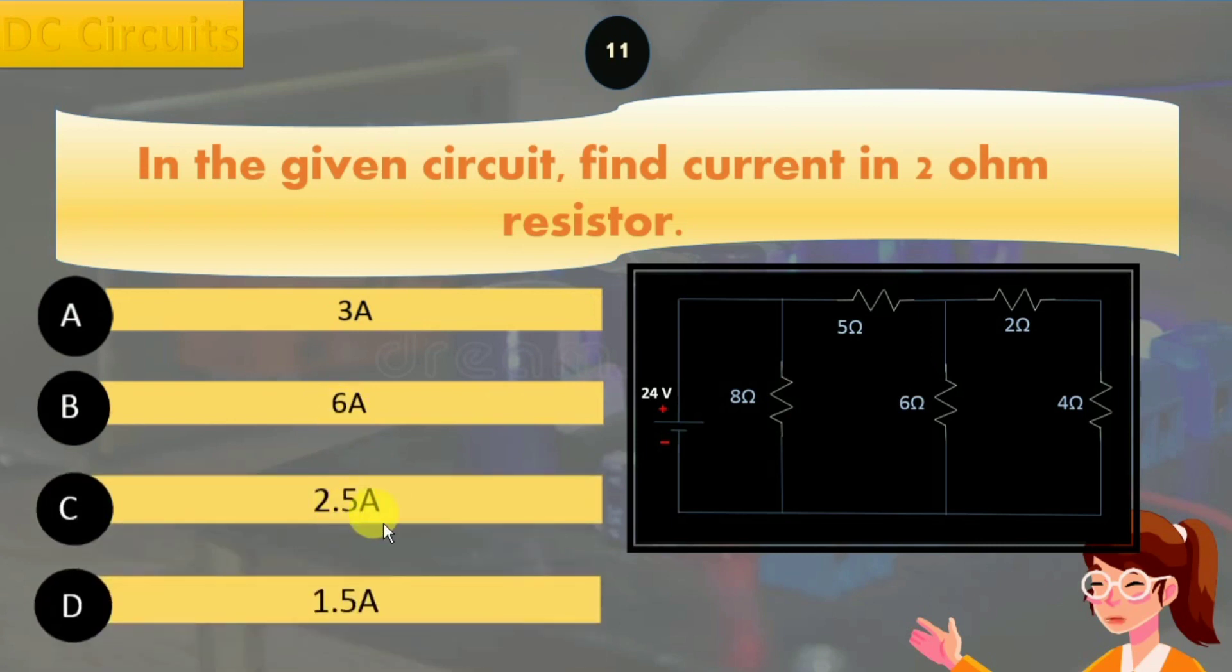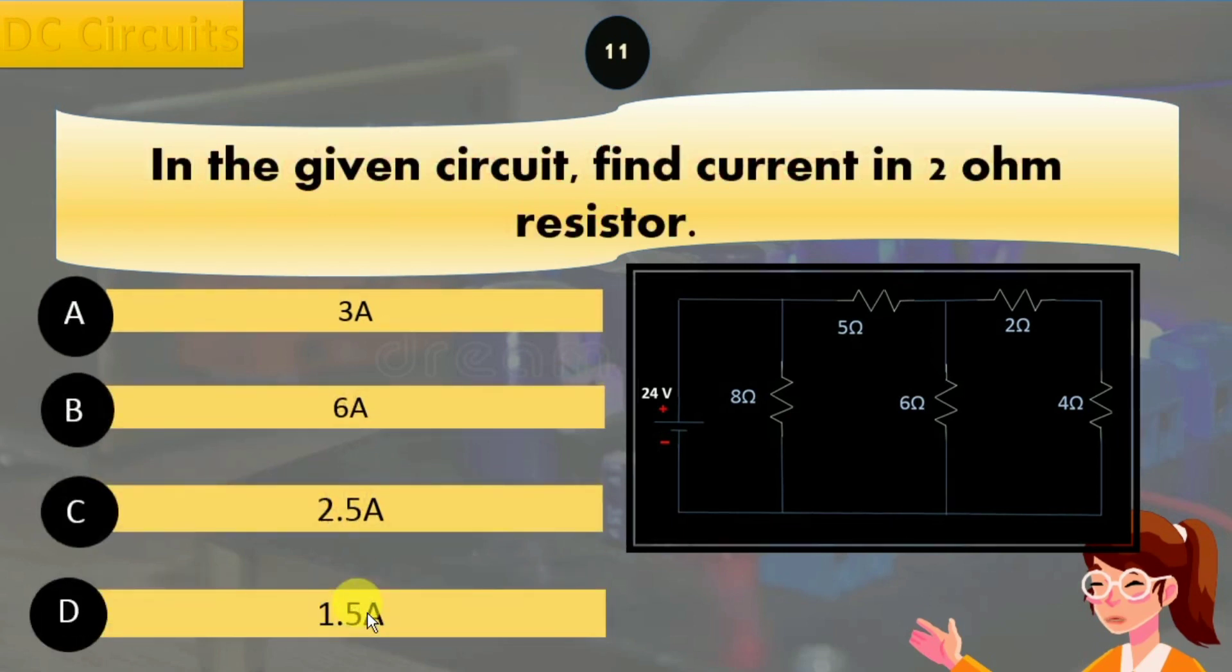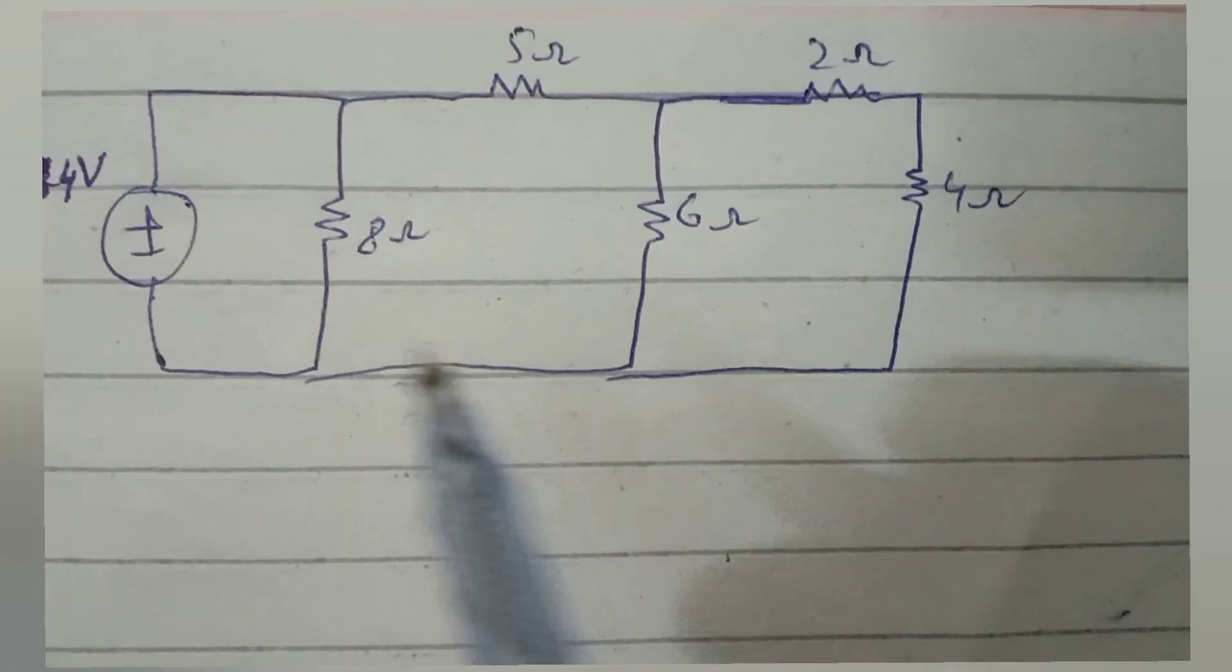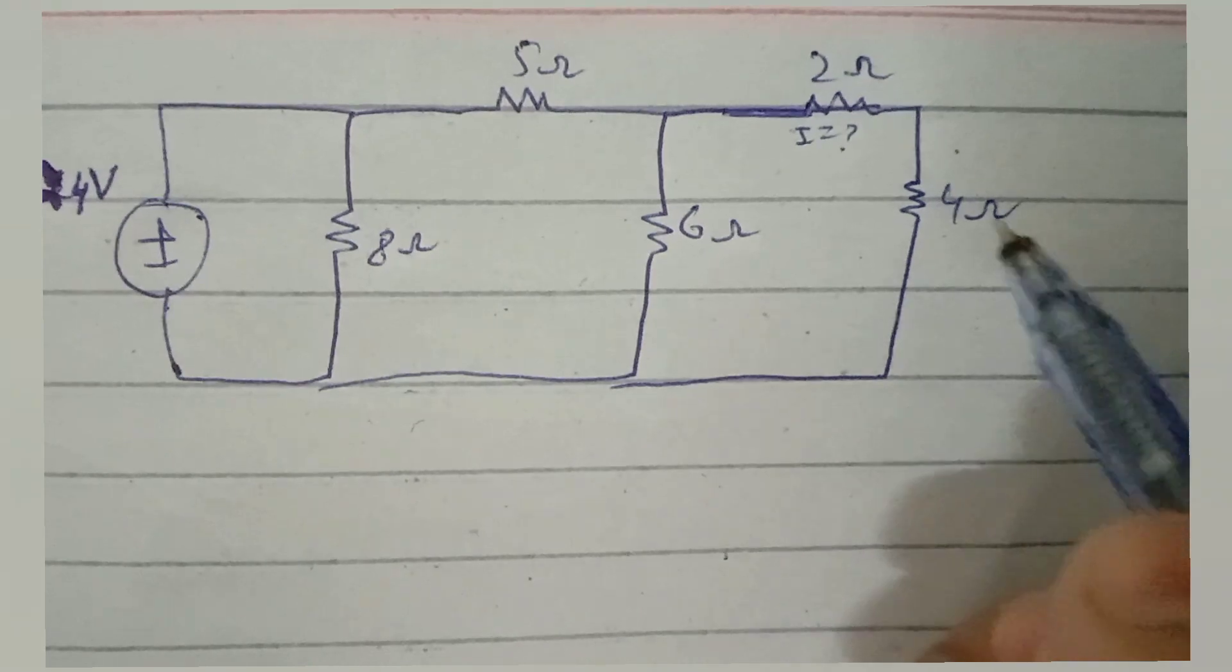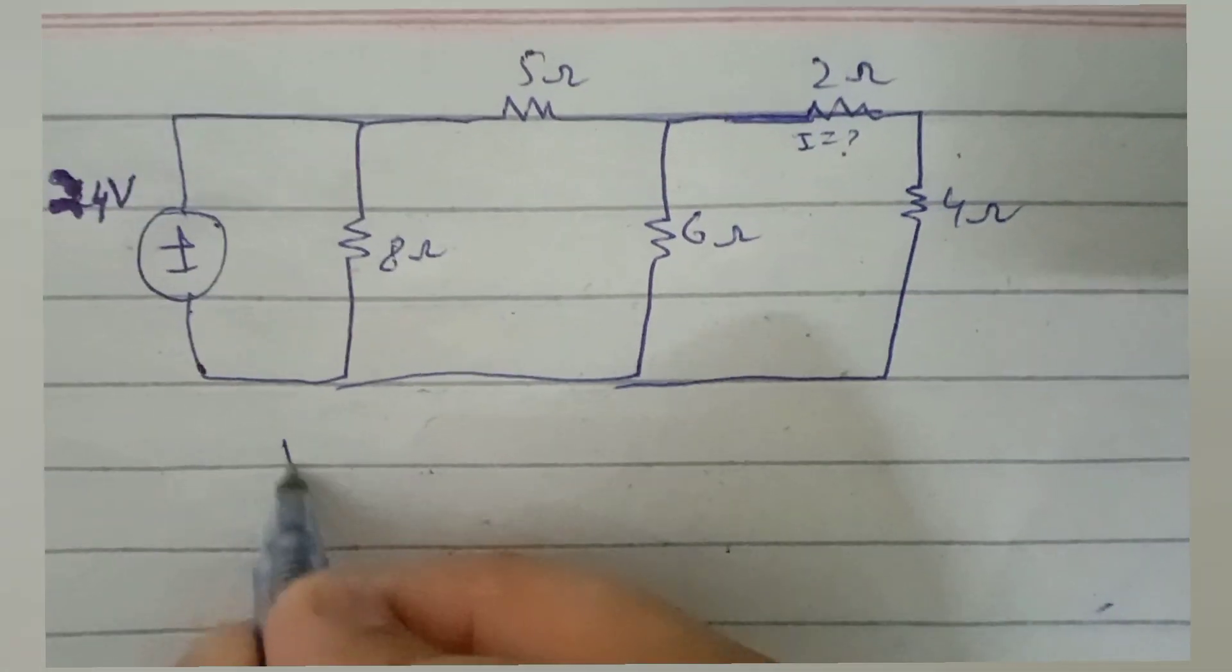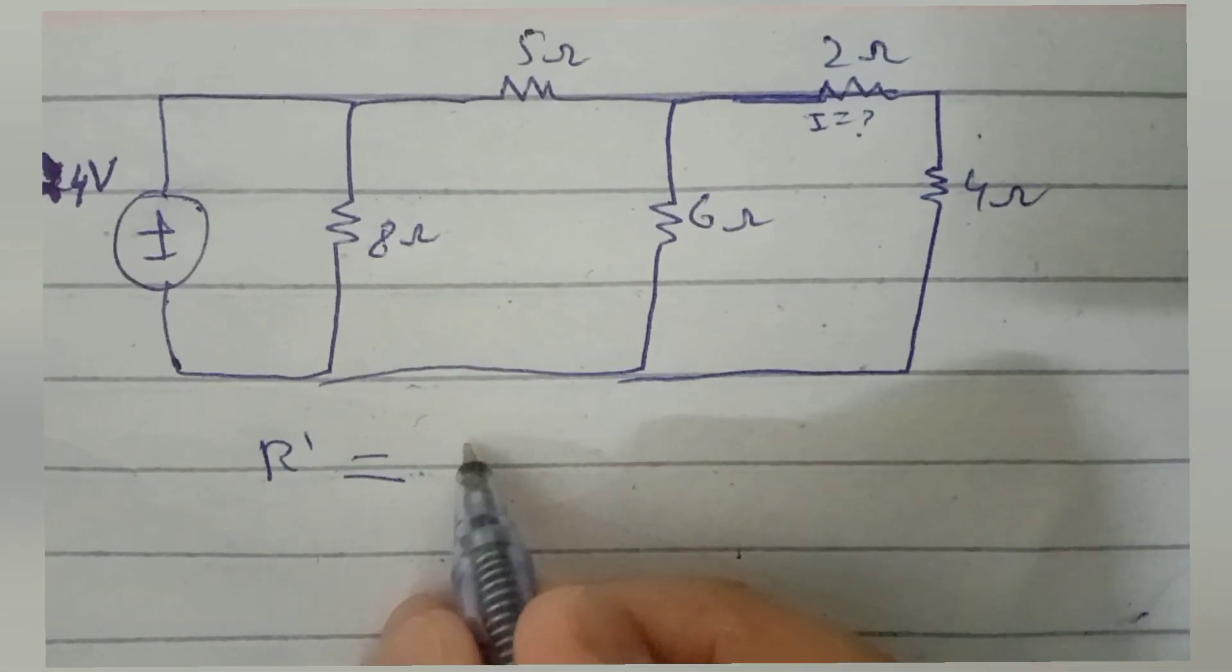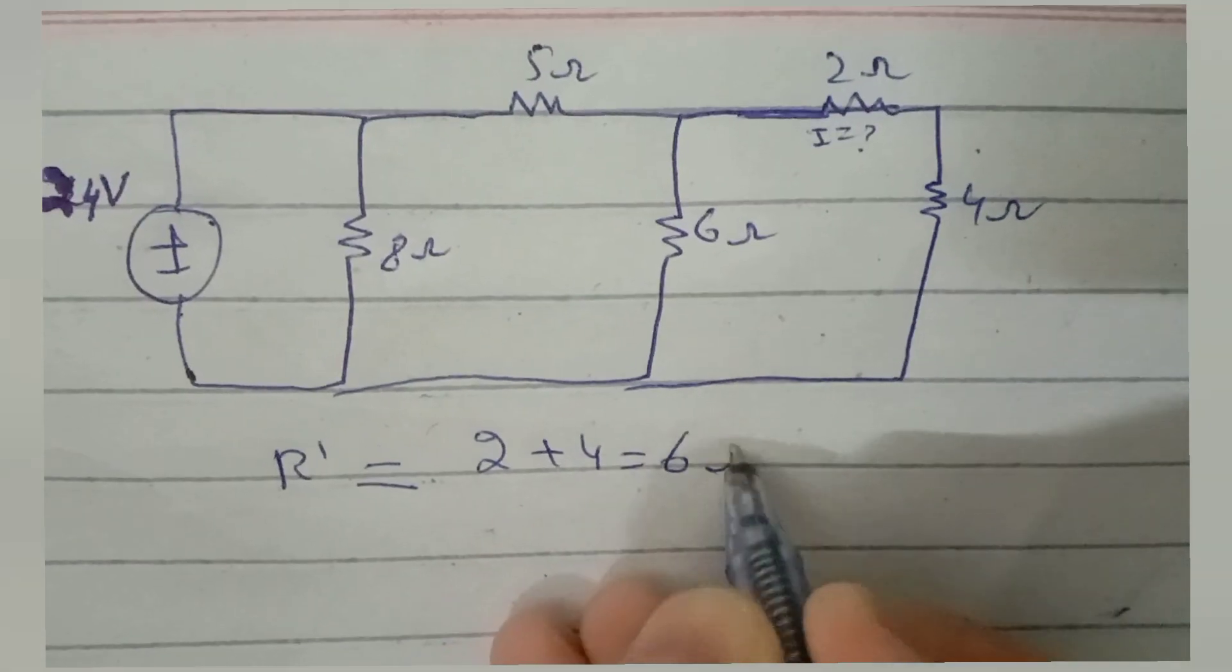Option D, 1.5 amperes. Again, this is the circuit and we have to find current in 2 ohm resistor. 4 and 2 ohm resistors are connected in series, therefore R' will be 4 plus 2 equals 6 ohms.